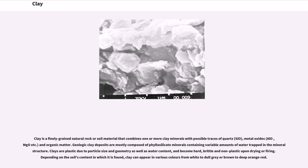Geologic clay deposits are mostly composed of phyllosilicate minerals containing variable amounts of water trapped in the mineral structure. Clays are plastic due to particle size and geometry as well as water content, and become hard, brittle and non-plastic upon drying or firing. Depending on the soil's content in which it is found, clay can appear in various colors from white to dull gray or brown to deep orange-red.